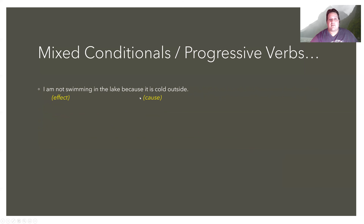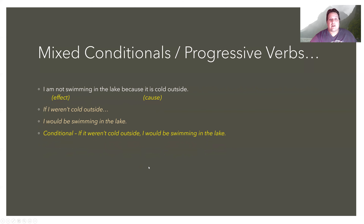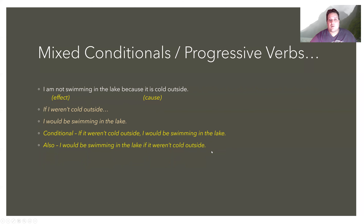'I'm not swimming in the lake because it is cold.' The cause uses the simple past, and since it's positive it becomes negative: 'If it weren't cold outside.' We have the progressive now, so we use the second conditional result clause with a progressive: 'I would be swimming in the lake.' The full conditional: 'If it weren't cold outside, I would be swimming in the lake.' We can also say: 'I would be swimming in the lake if it weren't cold outside.'